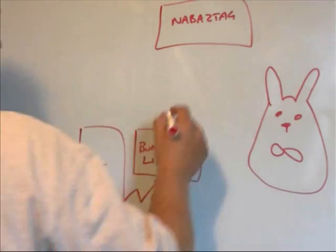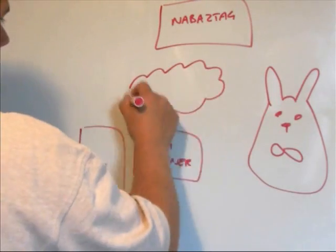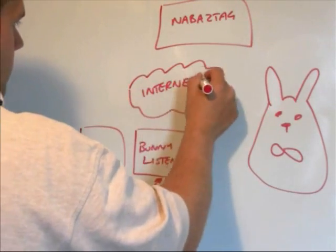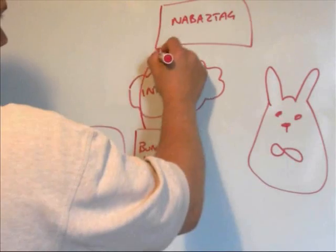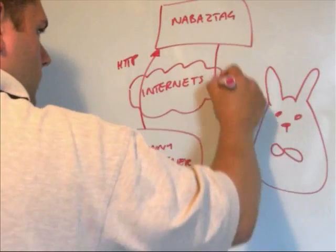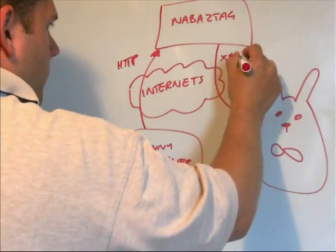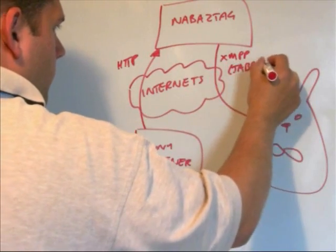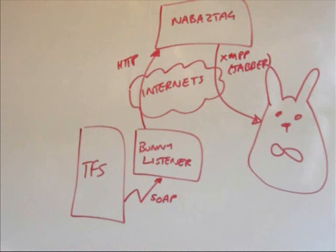Our web service gets the events from Team Foundation Server and sends an HTTP message to the Nabaztag servers over the internet. Then, Nabaztag uses XMPP, which is also known as the Jabber IM protocol, to instantly send the messages to Brian. Brian actually connects over Wi-Fi to my router, so it can be anywhere in the office.